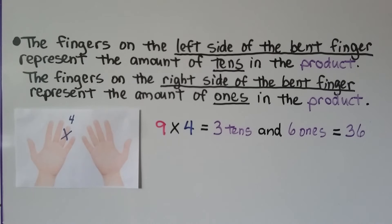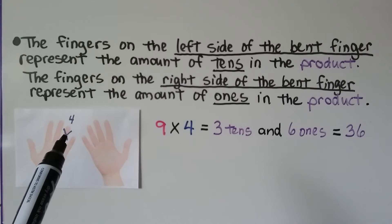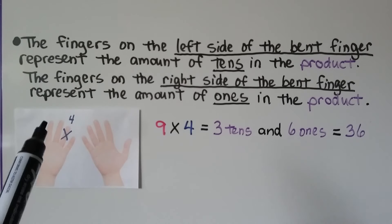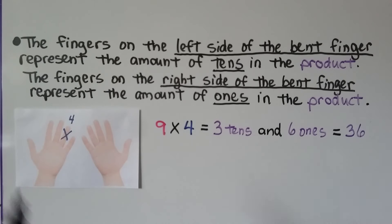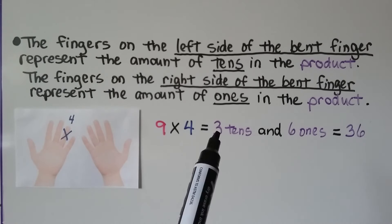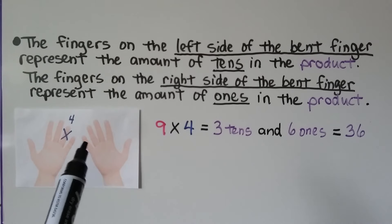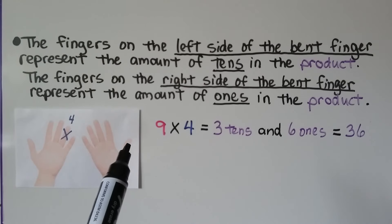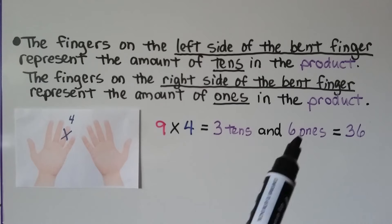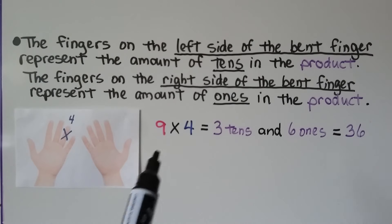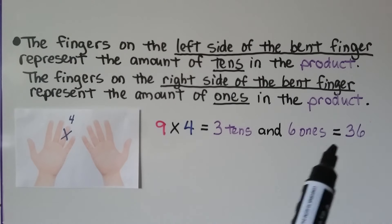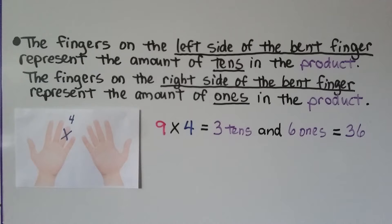With the 4th finger bent down, we have 1, 2, 3 fingers on the left side — that's 3 tens. On the right side we have 1, 2, 3, 4, 5, 6 fingers — that's 6 ones. So we have 3 tens and 6 ones. 9 times 4 is equal to 36.